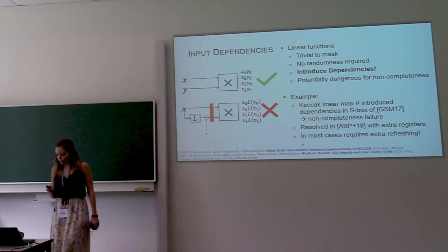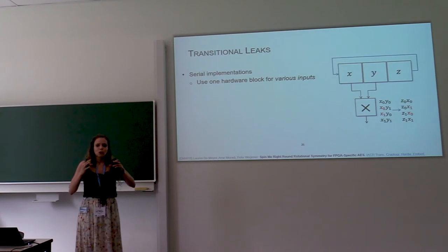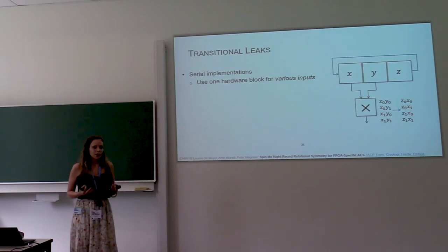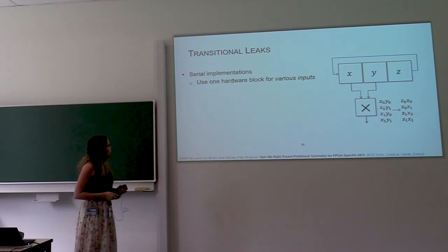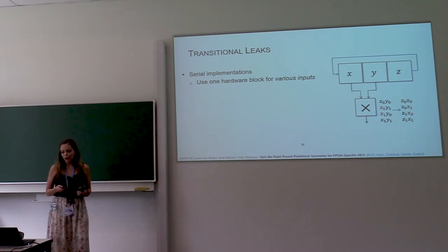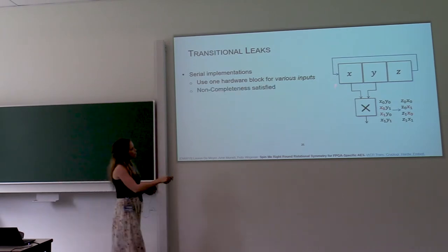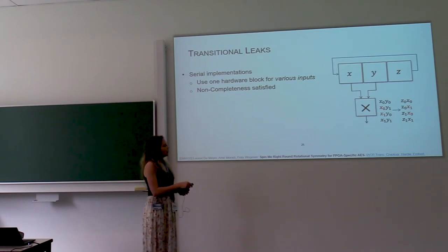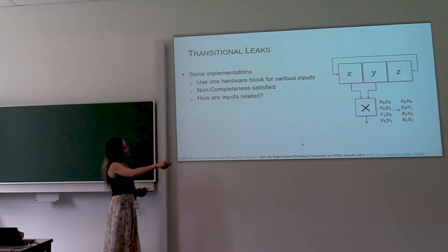Okay, so that's something to watch out for. And then finally, we quite like serial implementations in masked implementations because it allows you to use one hardware block for different inputs. So for example, the S-box is the most complicated part of our circuit, and we usually implement only one S-box for all the AES state bytes. Now, you have to be careful for how those inputs are related, these various inputs that you're going to put into it. So we have here as an example, this mini state of three elements, and we're going to multiply two of them. This multiplication, you can assume is fine, it satisfies non-completeness.